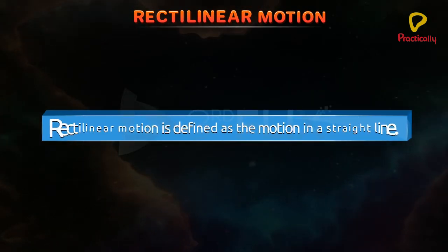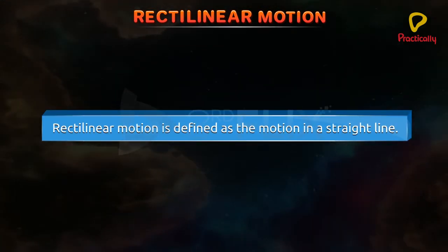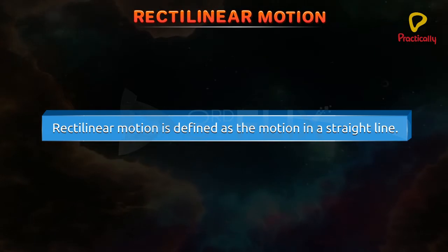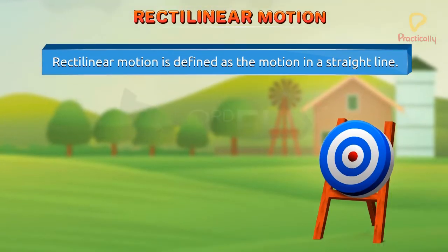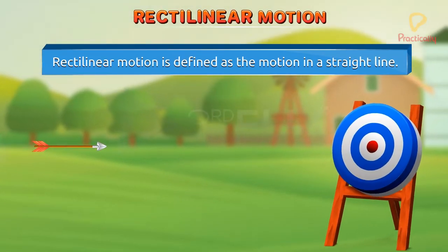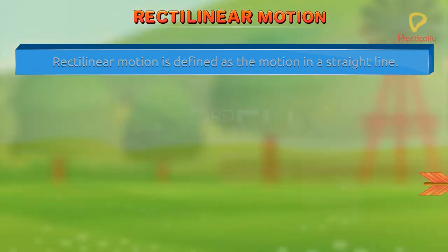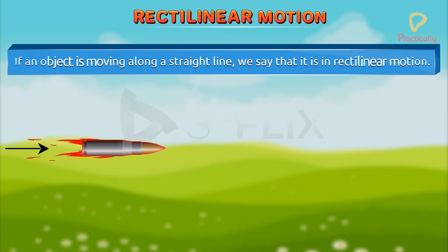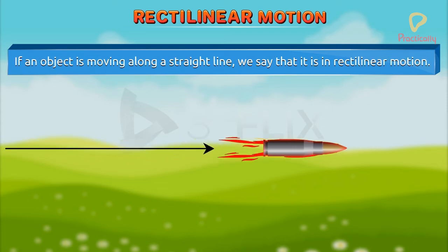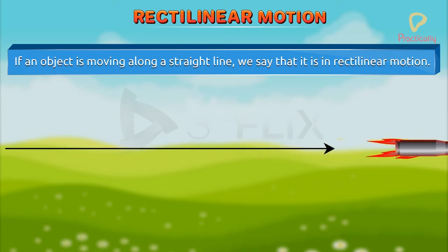Rectilinear motion is defined as the motion in a straight line. Here, the path of the moving object is a straight line. If an object is moving along a straight line, we say that it is in rectilinear motion.